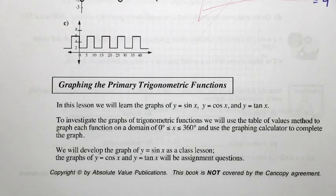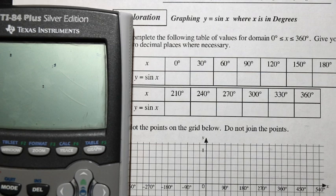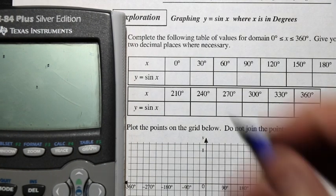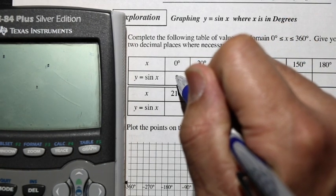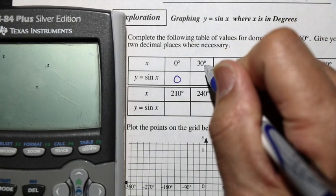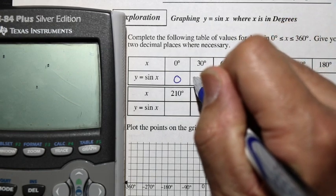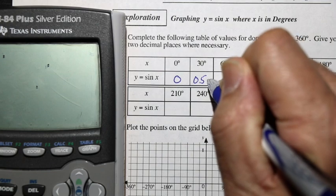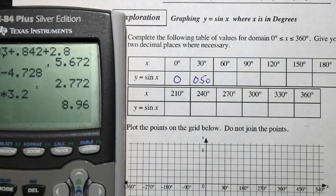So graphing primary trig functions, we're going to learn the graphs of y equals sine x, y equals cosine x, and y equals tangent x. So what we'll do is we'll use a table of values and graph each function on the domain of 0 to 360 degrees. Use the graphing calculator to complete the graph. Let's complete the following table, and we'll find the values for 0 to 360. So we'll just go to two decimal places if it's needed. Y equals sine x. Sine of 0 is equal to 0. Sine of 30 degrees is equal to 0.50. Sine of 60 degrees.